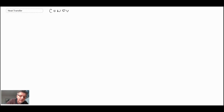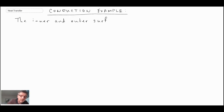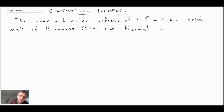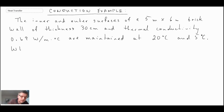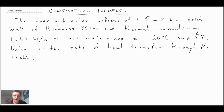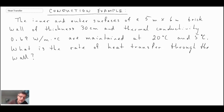Now we'll apply Fourier's Law with an example problem. We're given a brick wall: one side at 20°C, the other at 5°C, 30 cm thick, with a given thermal conductivity. We're asked to find the rate of heat transfer through the wall. Let's begin by writing out what we know.